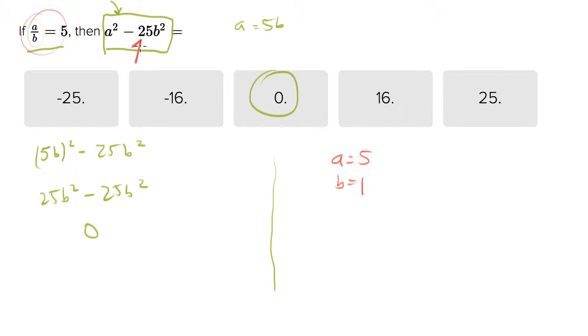Let's plug those numbers into the expression that we're given. So say 5 squared minus 25b squared, and then evaluate. 5 squared is 25, 25 times 1 squared is 25, and that equals zero.